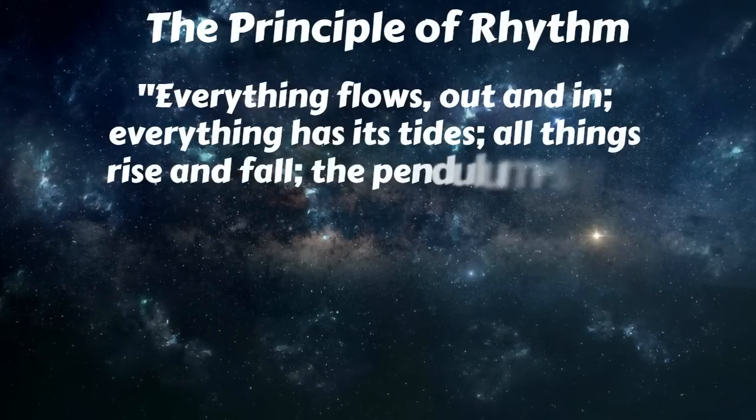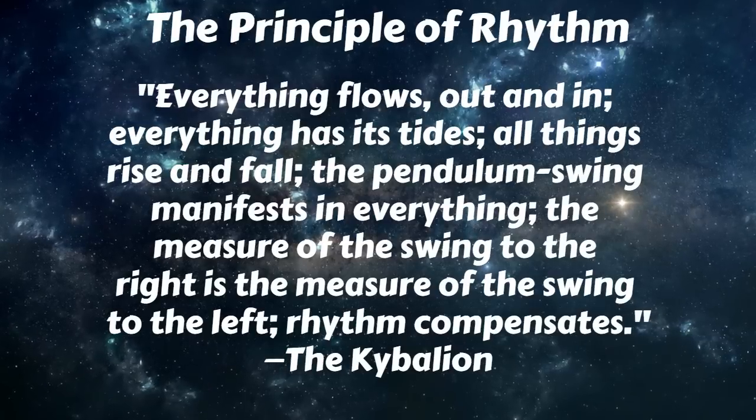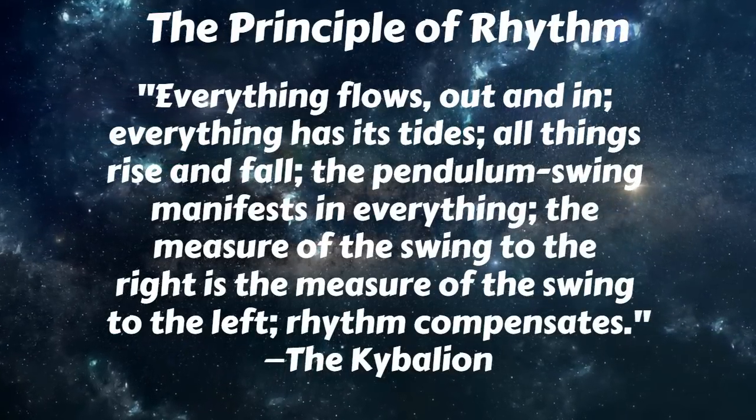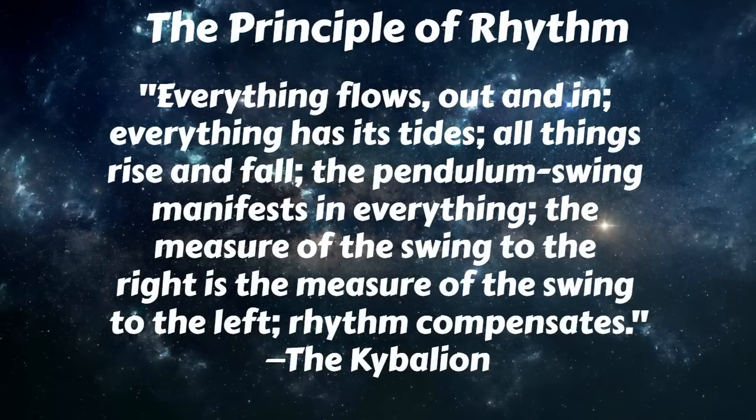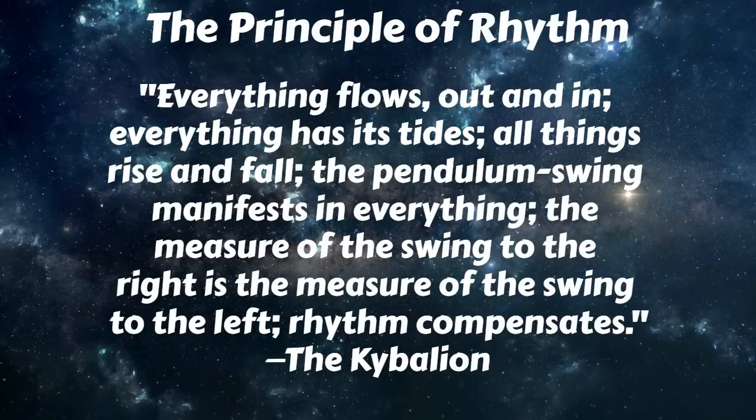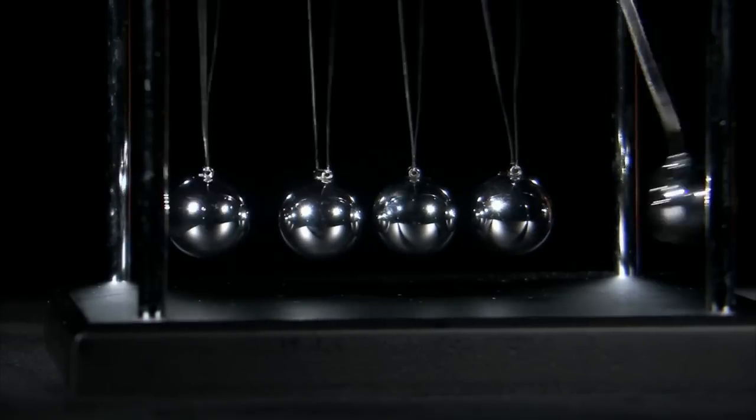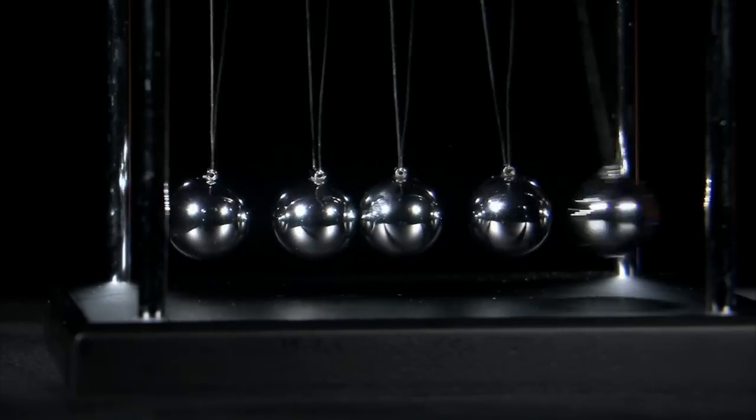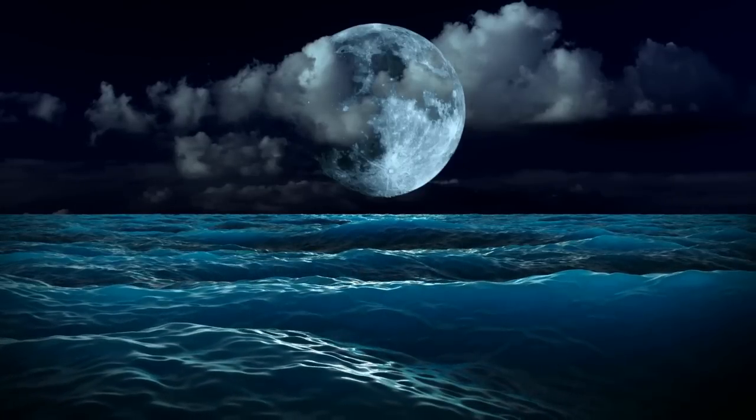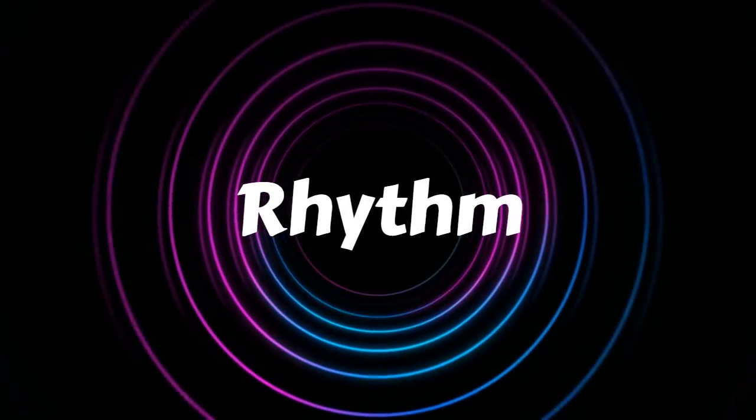The Principle of Rhythm. Everything flows, out and in. Everything has its tides. All things rise and fall. The pendulum swing manifests in everything. The measure of the swing to the right is the measure of the swing to the left. Rhythm compensates. This principle embodies the truth that in everything, there is manifested a measured motion, to and fro. A flow and inflow. A swing backward and forward. A pendulum-like movement. A tide-like ebb and flow. A high tide and low tide, between the two poles which exist in accordance with the principle of polarity.